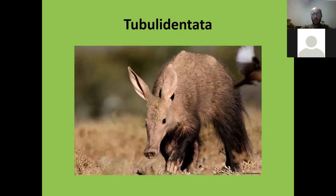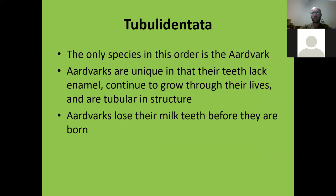The last group is Tubulidentata — it only has one animal, the aardvark, and there is only one species in this order. Aardvarks are unique in that their teeth lack enamel — all other mammals have enamel. Their teeth continue to grow throughout their lives in a tubular structure made up of dentine, much like a conveyor belt, very similar to rodents except that rodent teeth are capped with enamel. Aardvarks also lose their milk teeth before they are born, so they're born with their adult teeth.